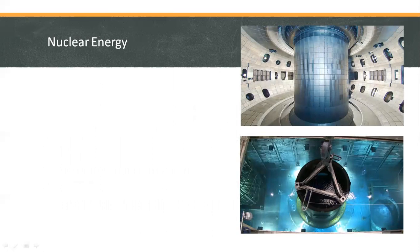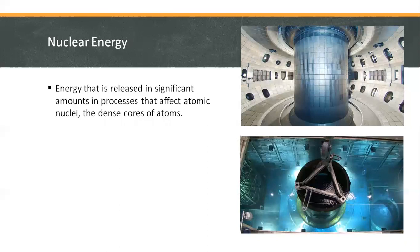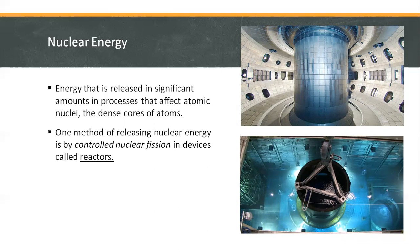Nuclear energy, also called atomic energy, refers to energy that is released in significant amounts in processes that affect atomic nuclei, the dense cores of atoms. It is distinct from the energy of other atomic phenomena such as ordinary chemical reactions, which involve only the orbital electrons of atoms. One method of releasing nuclear energy is by controlled nuclear fission in devices called reactors. The image at the lower portion to right is an image of a reactor. These reactors are now operating in many parts of the world with the production of electricity.